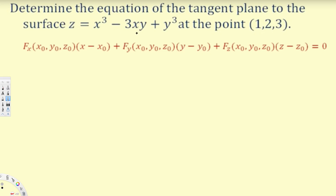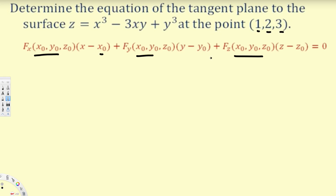The way to find the equation of the tangent plane is as follows. First, we rearrange the surface equation by equating it to zero to define F(x,y,z). Then we find the partial derivatives with respect to x, y, and z. After that, we plug in the given point coordinates (x₀, y₀, z₀) to figure out the final equation of the tangent plane.